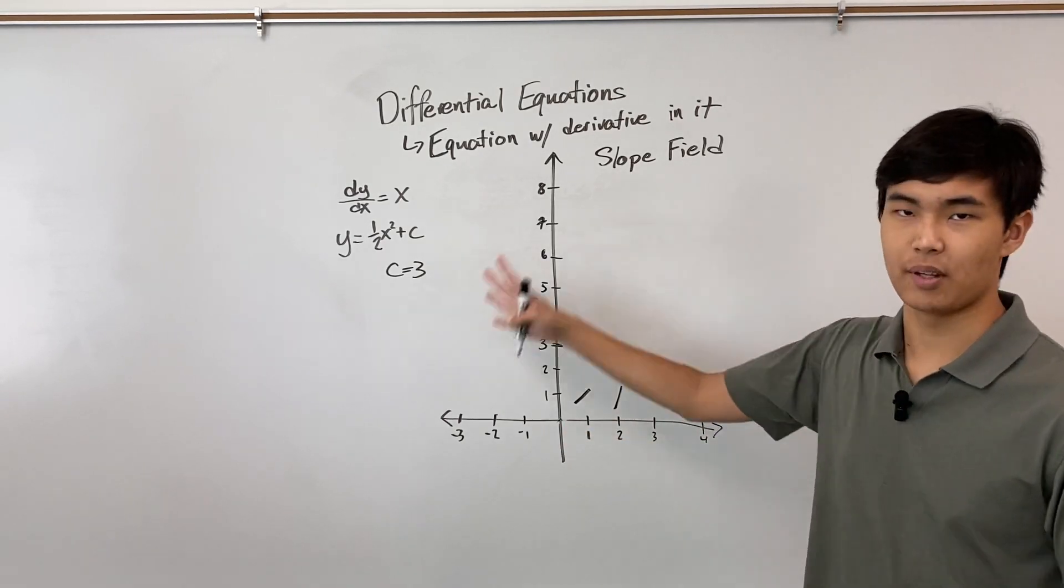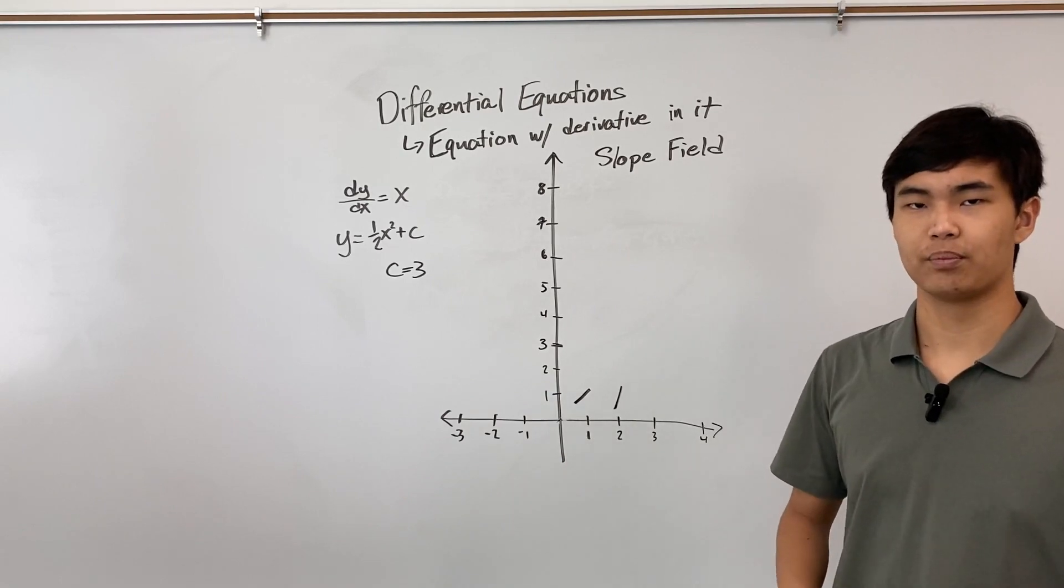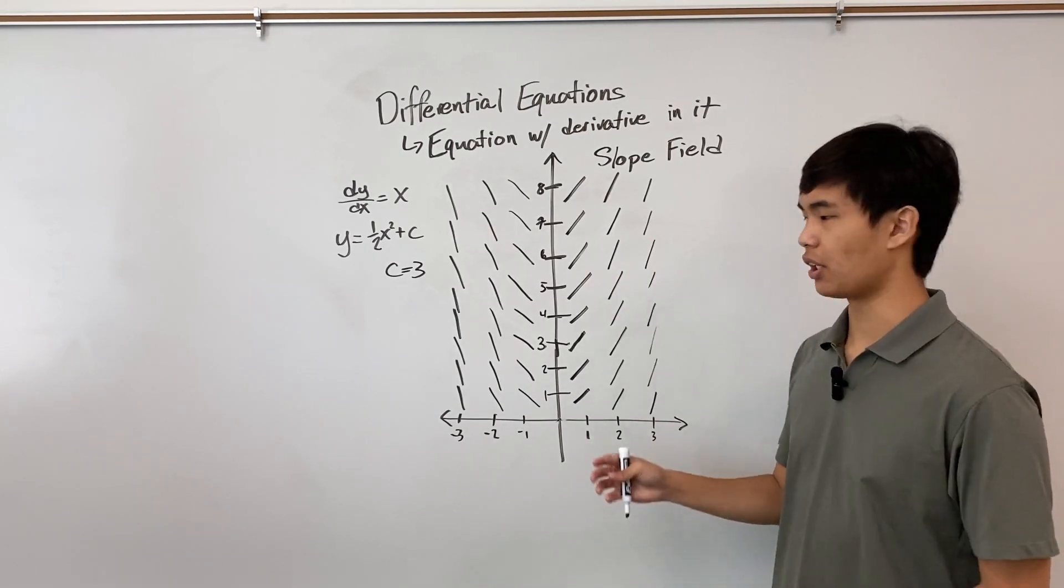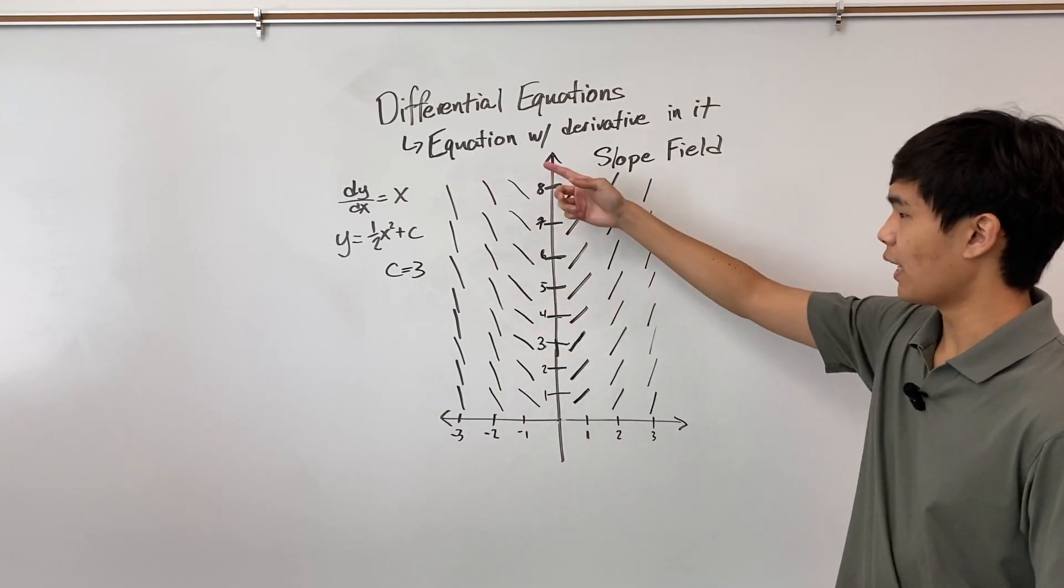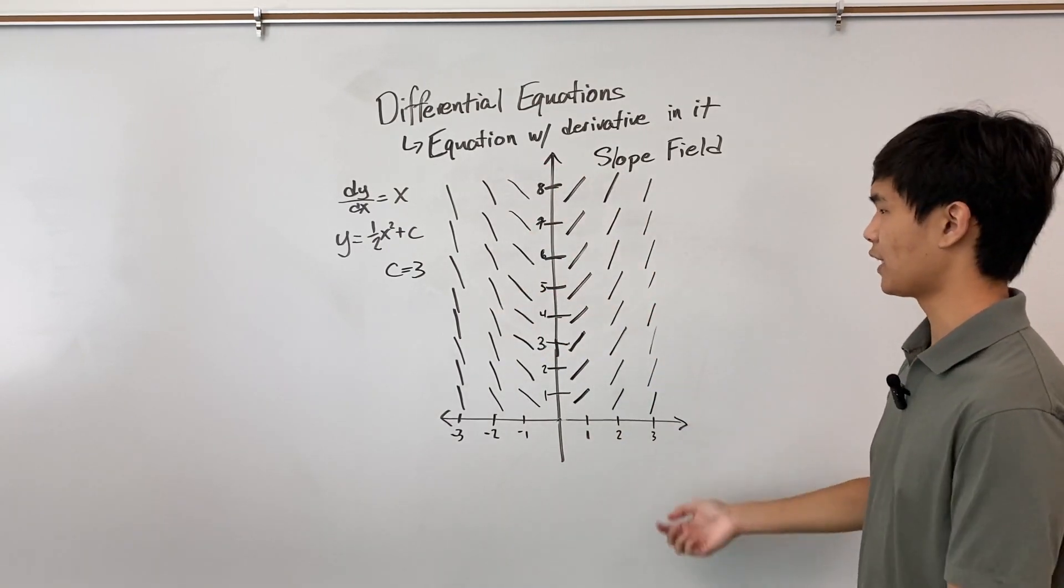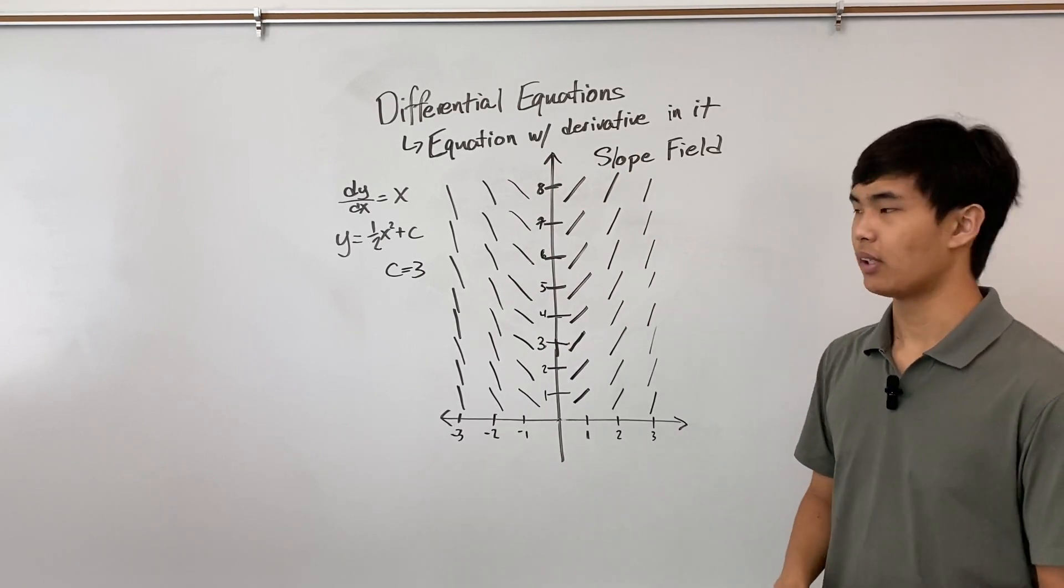Once there are a lot of them here, then you'll see what we're getting at. Now I filled in the slope field for our given plane. And you'll start to notice that these slopes, as we go from left to right, they kind of trace out the path of a parabola, right? And wouldn't you know, our solution, or our y, is a parabola.